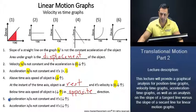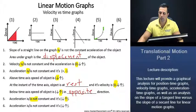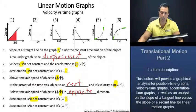For number five: acceleration is not constant because it's not a straight line. In the first scenario, it's increasing — we can see the slope is greater, thus there is an increase in acceleration. In the second scenario, the acceleration is decreasing. So acceleration is not constant and it's decreasing.